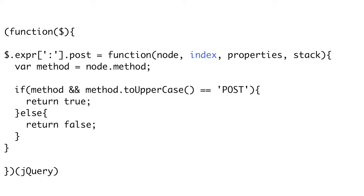The second argument is the index. The selector engine works by taking a list of elements and passing each one to our custom function one by one. This index argument indicates which element in that list we are currently looking at. Next is the properties array, which gives us various segments of how our pseudo-class was called. For instance, the second element will be the name of our pseudo-selector, and the fourth will be the arguments we pass to our pseudo-class, if any. The fourth argument is the full list of elements we are currently iterating over. In our example, we get the method attribute for our node, and if it exists and equals the string 'post,' we return true to indicate that this matches our pseudo-class. Otherwise, we return false to indicate that it does not.